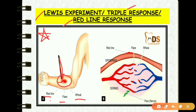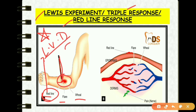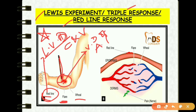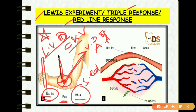The red line appears within a few seconds after stroking and indicates local vasodilation of capillaries and venules. The flare is a bright reddish appearance caused by vasodilation of adjacent arterioles. The wheal is because of swelling or edema. Remember these three points for the Lewis experiment or triple response experiment.